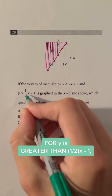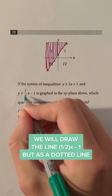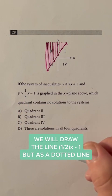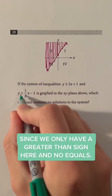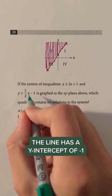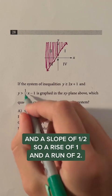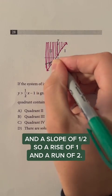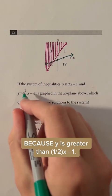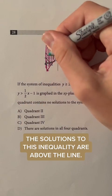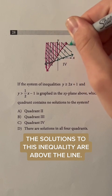For y is greater than 1 half x minus 1, we will draw the line 1 half x minus 1, but as a dotted line since we only have a greater than sign here and no equals. The line has a y-intercept of negative 1 and a slope of 1 half, so a rise of 1 and a run of 2. Because y is greater than 1 half x minus 1, the solutions to this inequality are above the line.